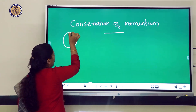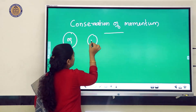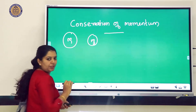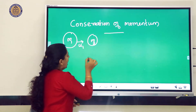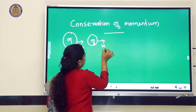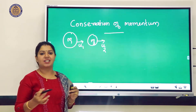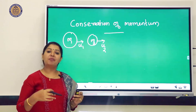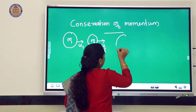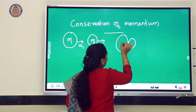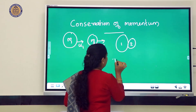To prove conservation of momentum, consider two objects: a first object of mass m₁ moving with initial velocity u₁ and a second object of mass m₂ moving with initial velocity u₂. These two objects have different masses and different velocities. After some time, these two balls collide with each other.